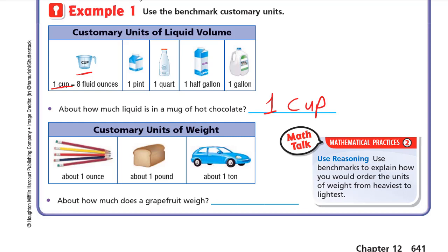Now we have the customary units of weight. One ounce is about the weight of several pencils — pencils are really light, so several pencils is about one ounce. A loaf of bread is about one pound, and one pound is about half a kilogram. Heavy things like a car are about one ton. For the question about a grapefruit: ounces would be too light and tons too heavy, so a grapefruit weighs about one pound.